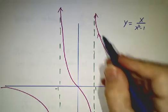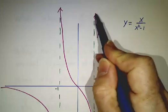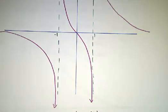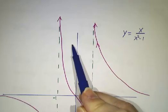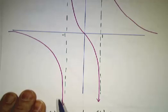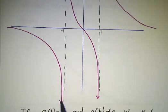It blows up. Whenever x is slightly bigger than one, f is gigantic. Whenever x is slightly less than one, it's gigantic and negative. Whenever x is slightly bigger than negative one, it's gigantic and positive. Whenever x is slightly less than negative one, it's gigantic and negative.